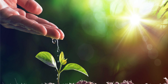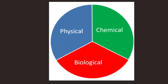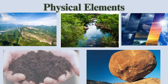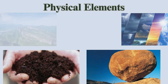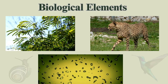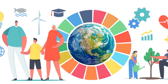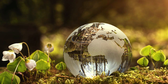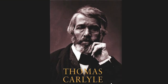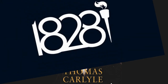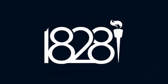There are three main elements of environment: physical, chemical and biological. Physical elements include landforms, water bodies, climate, soil and rocks. Biological elements encompass plants, animals and microorganisms. Additionally, cultural elements such as social and economic conditions also contribute to the environment. The term environment was coined by Thomas Carlyle in 1828 in Scotland.